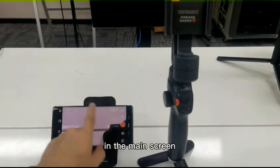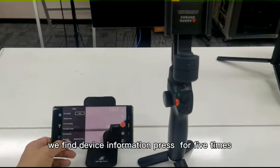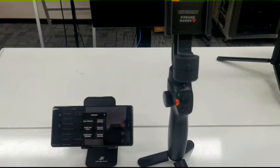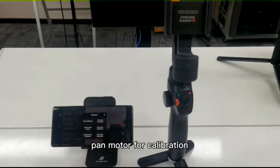In the main screen, we find device information, press for 5 times. In this screen, we press pan motor for calibration.